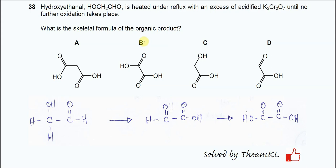Question 38. Hydroxyethanol is heated under reflux with excess acidified potassium dichromate until no further oxidation takes place. What is the skeletal formula for the organic product?